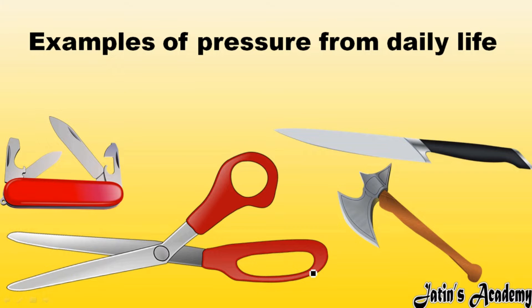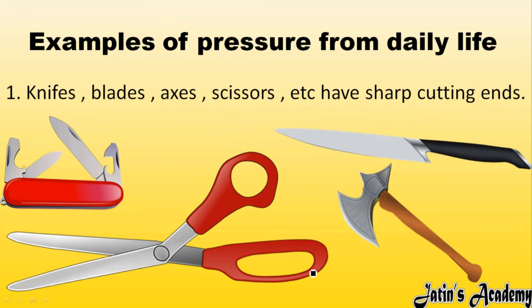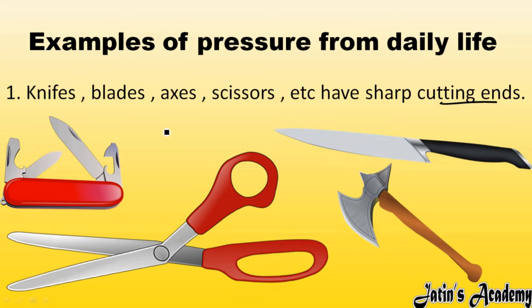Next we are having examples of pressure in our daily life — where this concept of pressure we are going to apply. So one by one we are going to study. First example: knife blades, axes, scissors, etc. have sharp cutting edges. Why do we use knives or scissors with a sharp cutting edge? Because the sharp cutting edge area is minimum — area is less. As we know, pressure is force over area, so if area is less, then pressure exerted on any object will be more.